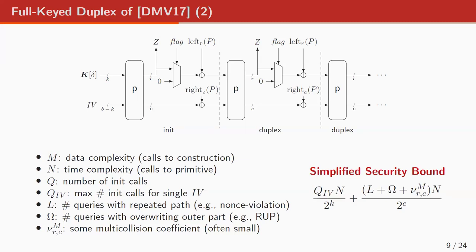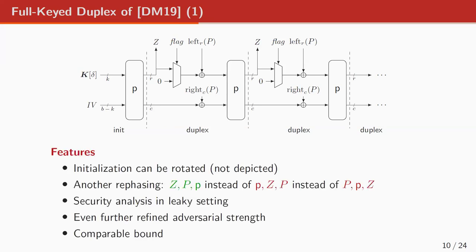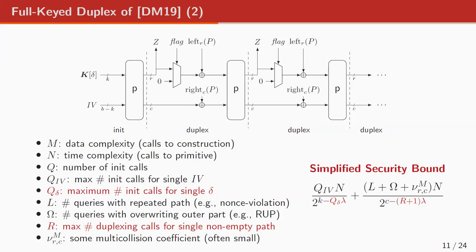Two years later, de Browning and me looked at a different version of the duplex — basically the same construction but with a rotation of the initialization for technical purposes. The incentive was to look at leakage resilience, and for that we re-phased to squeeze, absorb, permute instead of permute, squeeze, absorb. That allowed us to give security in the leaky setting. The point is we get the same security bound, but with leaky terms: if lambda bits can leak per permutation evaluation, you get a slight degradation in the bound, but the core idea remains the same.